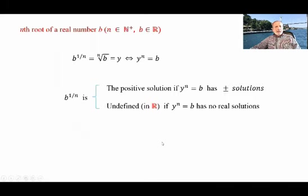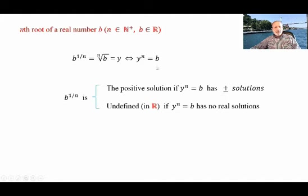Now, what is the nth root of a real number b? Where n is a positive integer and b is a real number. We define b to the power 1/n as the nth root of b. If this equals y, that means y to the power n equals b. So b to the power 1/n is the positive solution if y to the power n equals b has plus or minus solutions, and it's undefined in R if y to the power n equals b has no real solutions.